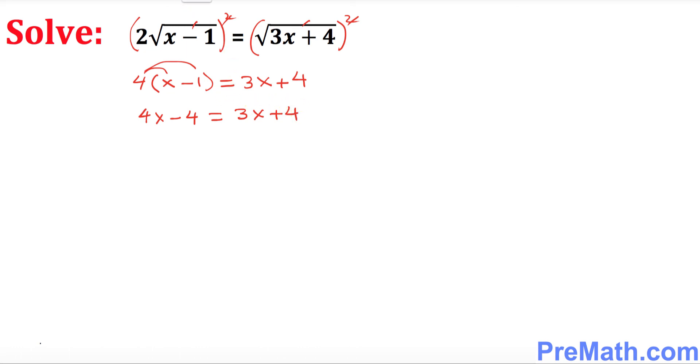Once again what I want you to do is I want you to go ahead and drag this 3x on the left hand side and negative 4 on the right hand side. So what we're going to get is 4x, and once you move this positive 3x on the other side, it becomes negative 3x equals to 4 is already there, and once you move this negative 4 that's going to become positive 4.